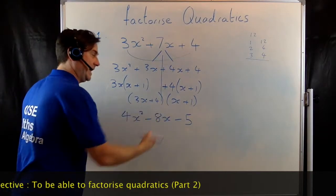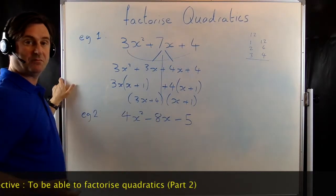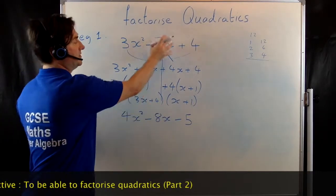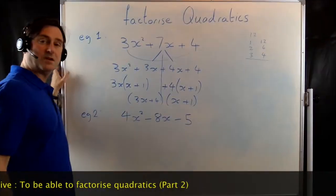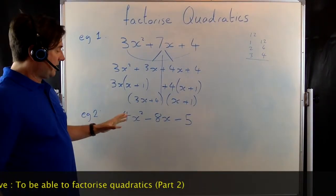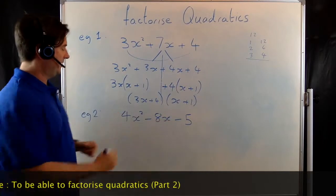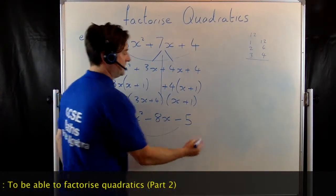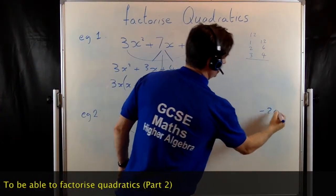If I then multiply that out like we did if you remember in part 1 I would get back to that expression. Example 2 then. Same thing but we've got a negative here. So if I do 4 times negative 5 I get negative 20.